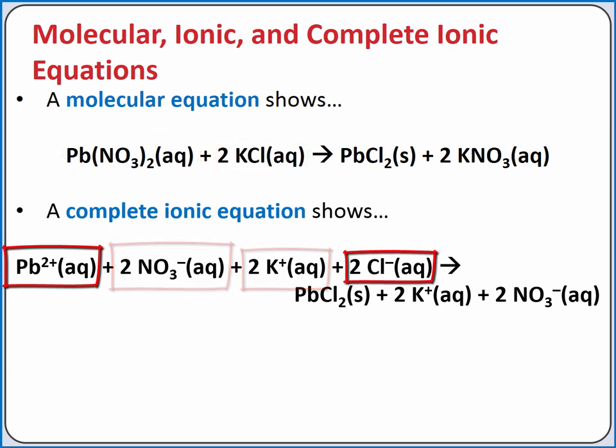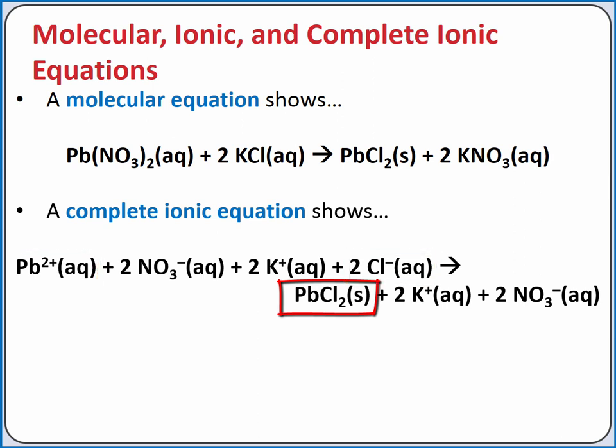During the reaction, the lead-2-plus ions combine with the chloride ions to produce the precipitate. Since lead-2-chloride is an insoluble ionic compound, it is not a strong electrolyte, so it is not broken apart into ions in the complete ionic equation. The potassium and nitrate ions, however, remain in solution since potassium nitrate is a soluble ionic compound.